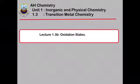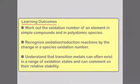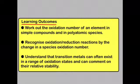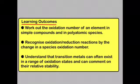In this lecture we're going to look at the oxidation states of transition metals and other elements as well. By the end of this lecture you should be able to work out the oxidation number of an element in simple compounds and in polyatomic species. You should also be able to recognise oxidation and reduction reactions by looking at the change in a species oxidation number, and understand that transition metals can often exist in a range of oxidation states and comment on their relative stability.